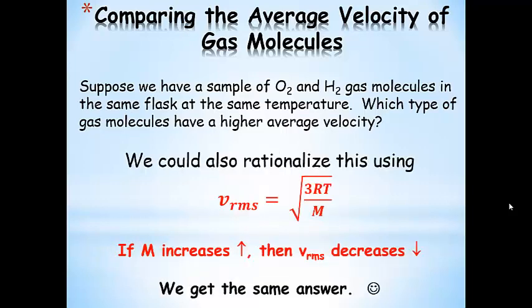We could also use our root mean square speed equation to confirm this — it's much easier to see. Since temperature is constant and R and 3 are constants, the root mean square speed is inversely proportional to the molar mass. If we increase the molar mass, the RMS speed decreases, giving us the same answer.